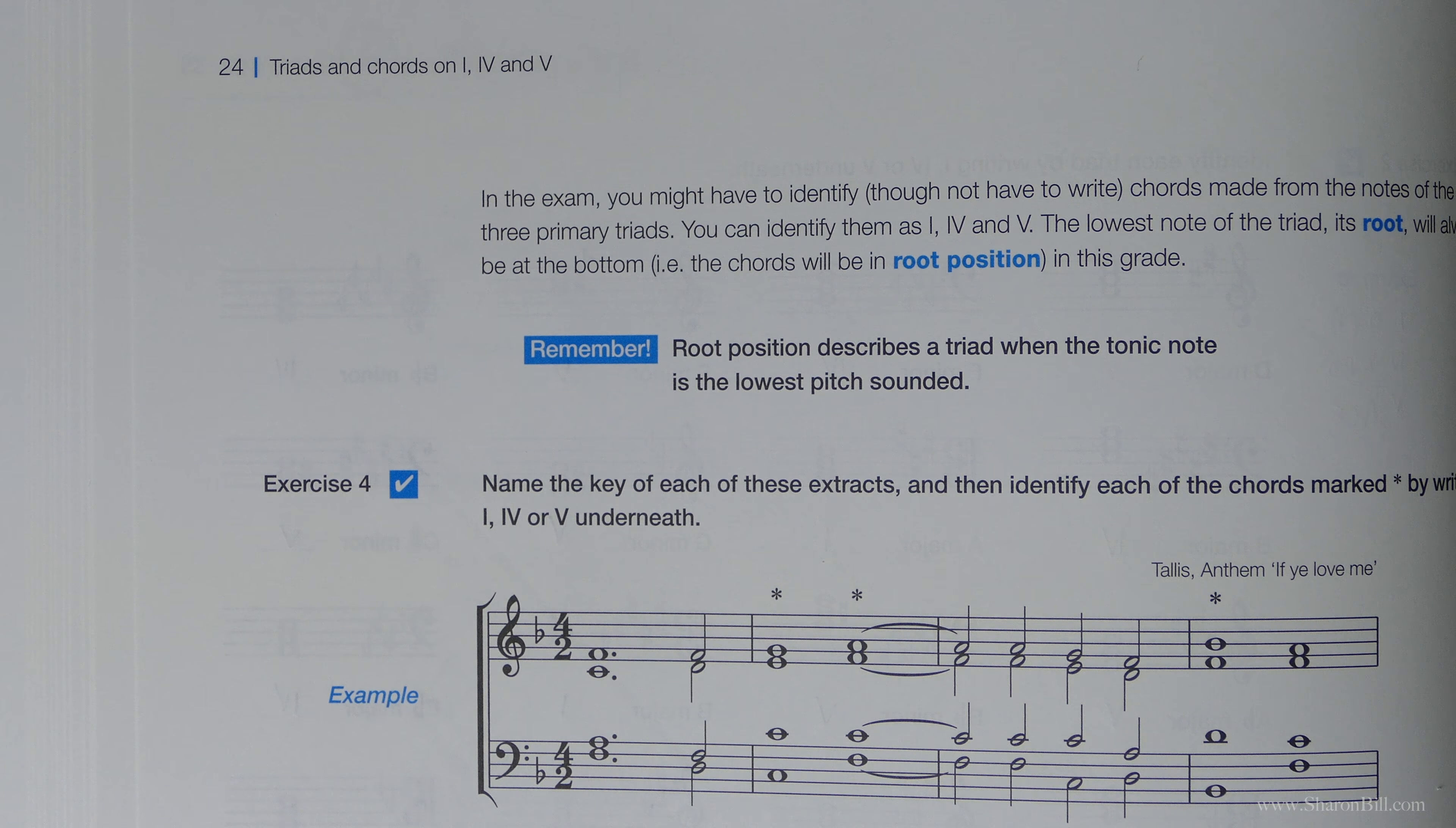And so the 1st is C, 1st, 2nd, 3rd is E, 5th is G, F, A, C, 1st, 3rd, 5th, G, B, D. And if you just get used to writing them in letter form like that, it makes the identifying chords so much easier when you get to the actual exercises.